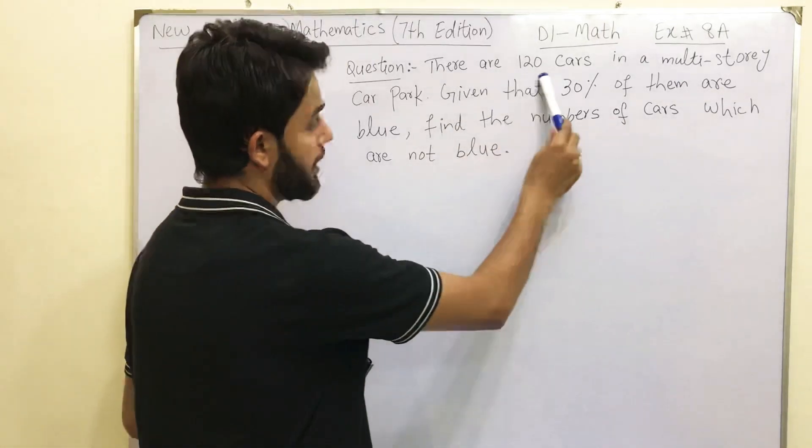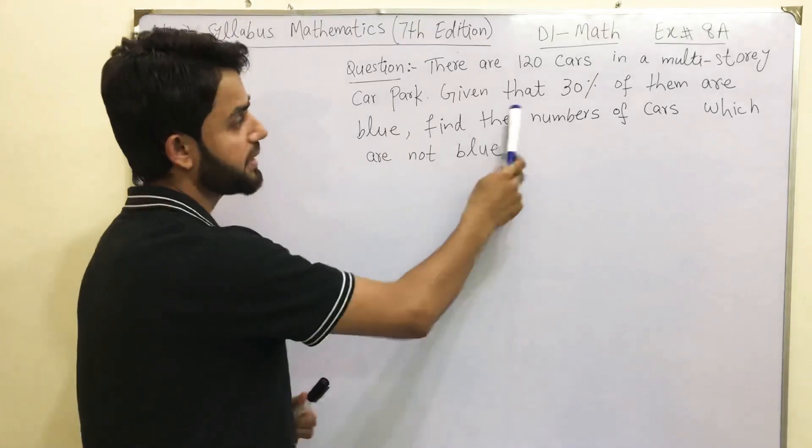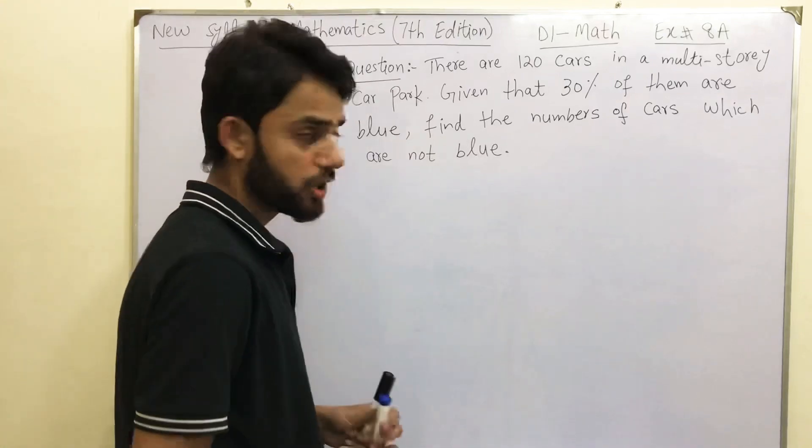The question says there are 120 cars in a multi-story car park. Given that 30% of them are blue, find the numbers of cars which are not blue.